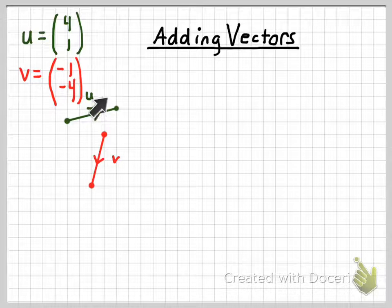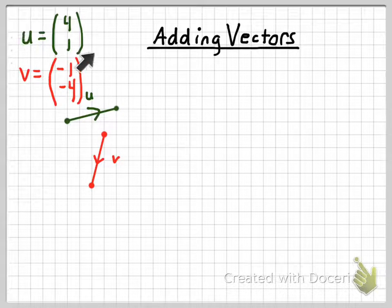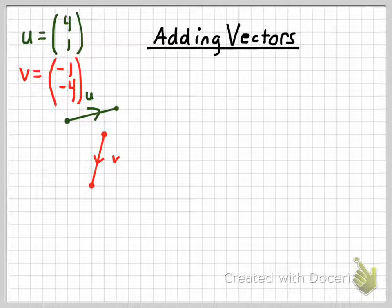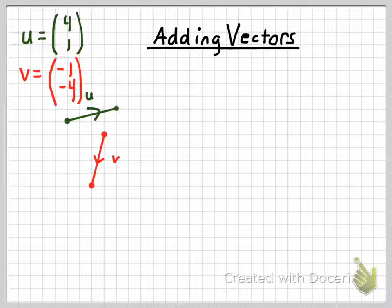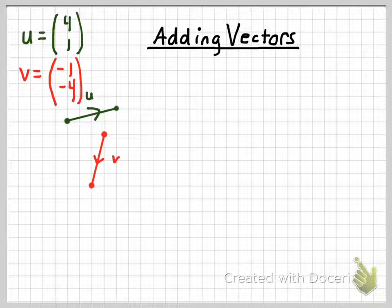Let me show you the geometrical standpoint of how you add two vectors first, and then we'll look at the arithmetic standpoint using the actual components. Geometrically, the sum of two vectors is another vector that gets you from the beginning of the first vector directly to the end of the second vector — when the initial point of the second vector is placed at the terminal point of the first.